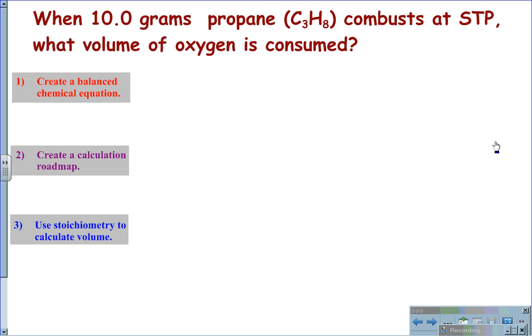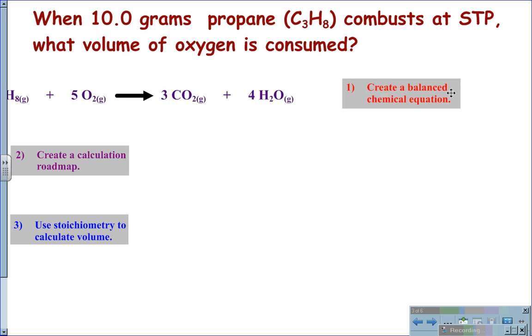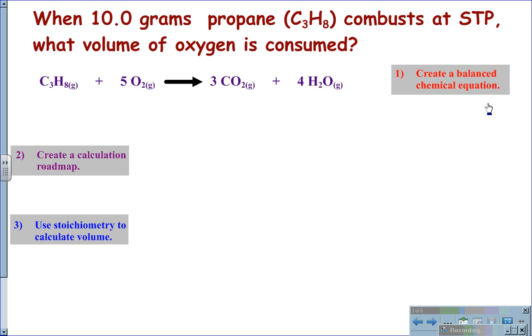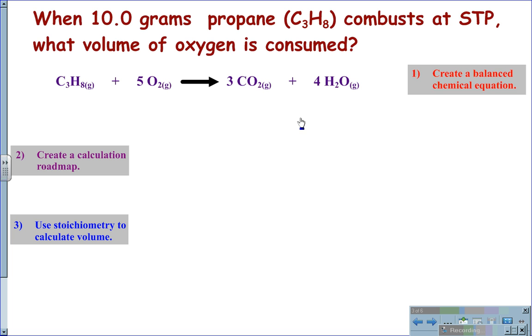For the problem, when 10 grams of propane C3H8 combusts at STP, what volume of oxygen is consumed? The first thing we need to begin with is a balanced chemical equation. The balanced chemical equation is C3H8 plus O2 yields CO2 plus H2O. And then balancing it out with the correct coefficients we get one molecule of propane, five molecules of oxygen O2 since it is diatomic, three molecules of carbon dioxide CO2, and four molecules of water.